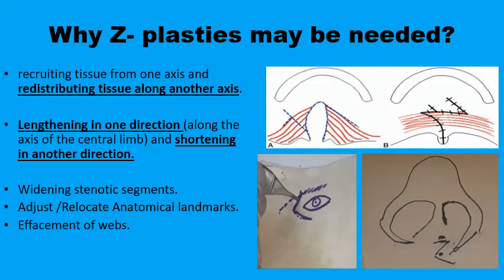Generally speaking, the fundamental idea behind the z-plasty is to recruit tissues from one axis in the surgical field and redistribute these tissues along another axis, thereby lengthening in one direction at the expense of shortening in another direction where you have more redundant tissues. This can be used to your advantage.